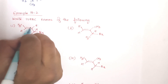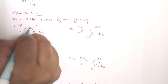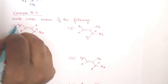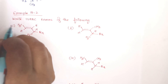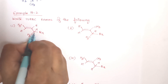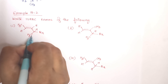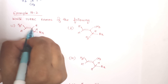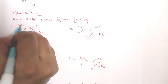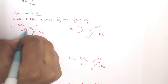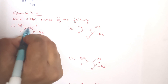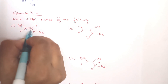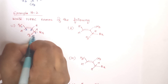These next examples involve a methyl substituent, a halogen substituent, plus a double bond. Remember: whenever there is a double bond, the double bond should get the least number. For the first compound, if you start numbering from one end the double bond gets position 3; if you start from the other end, the double bond gets position 2. So we number from the end that gives the double bond the least number: 1, 2, 3, 4, 5.